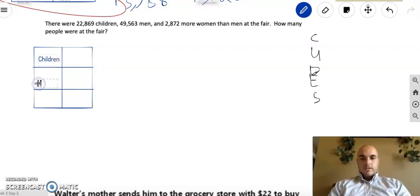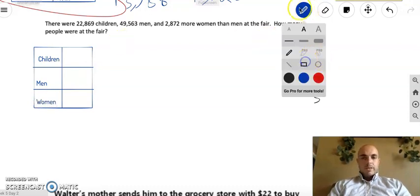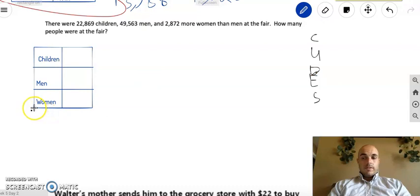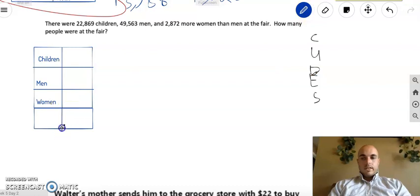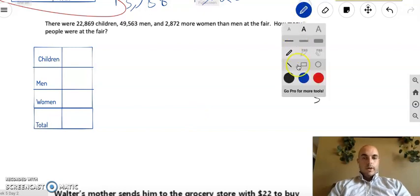Children, men, and women. And just from looking at the end there, how many people are at the fair? So that must mean I'm finding a total if I had to guess. So I'm going to put my total here. Like so. I'll type it in. Boom.